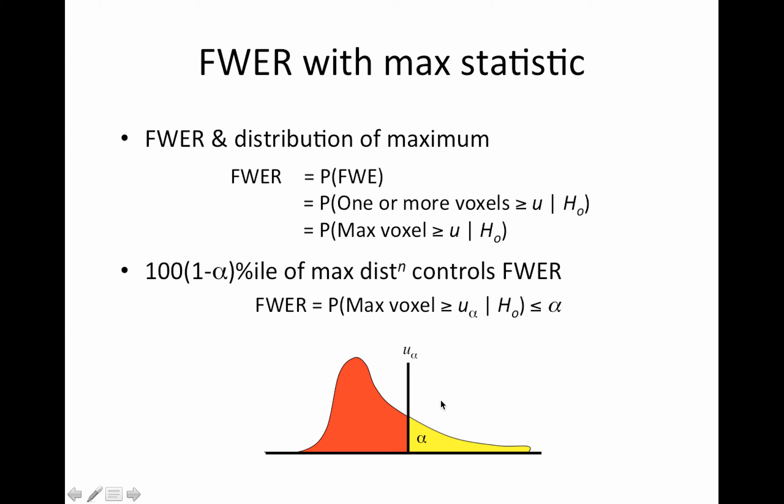And then any statistic beyond this would be rejected. So same idea. We're just using a different distribution and it looks different. It looks weird, right? We're not used to seeing this.